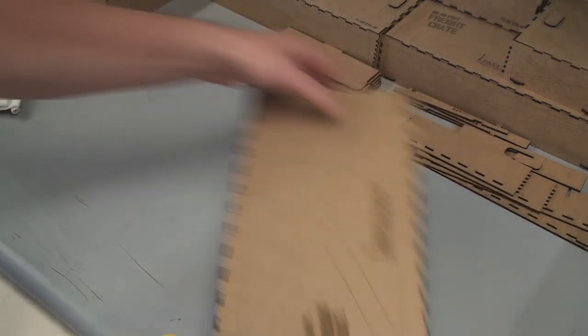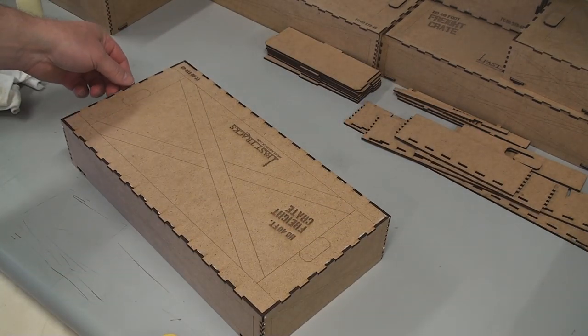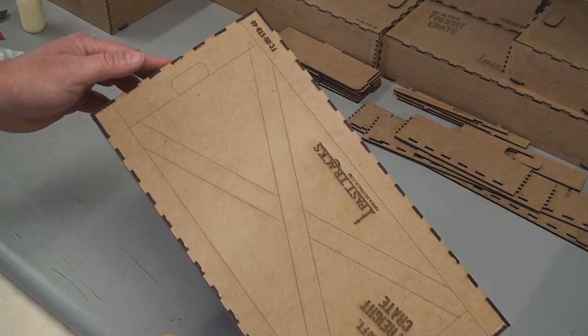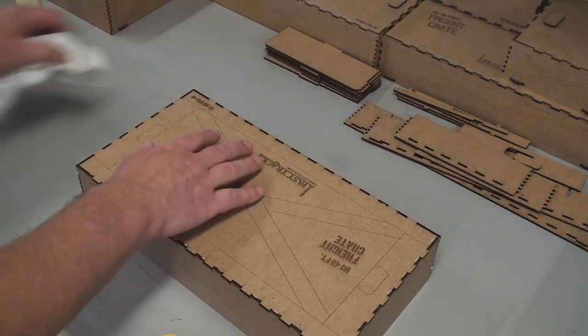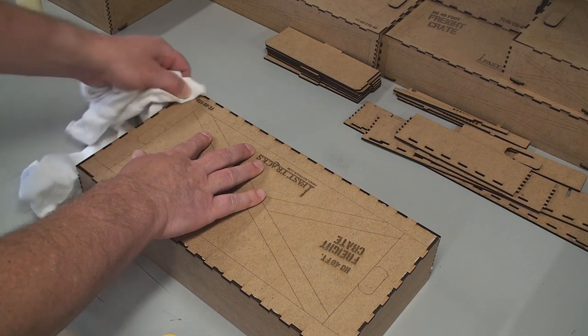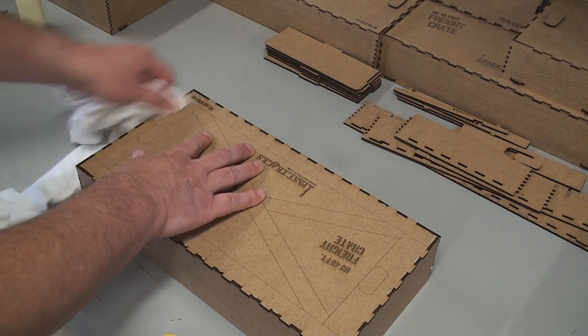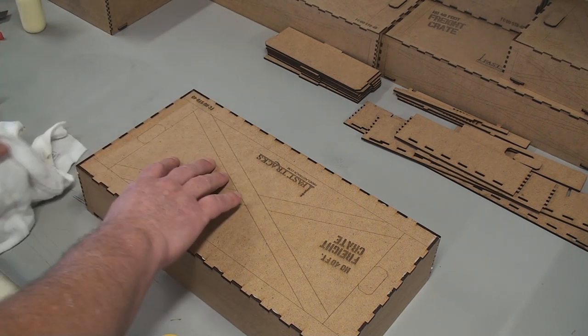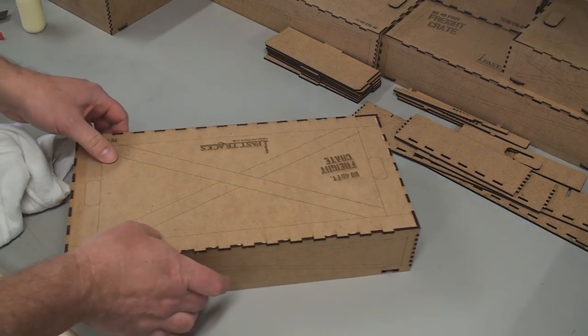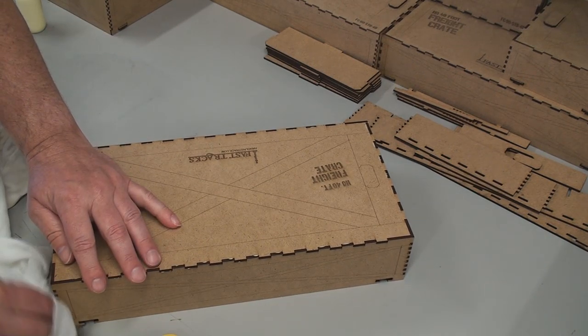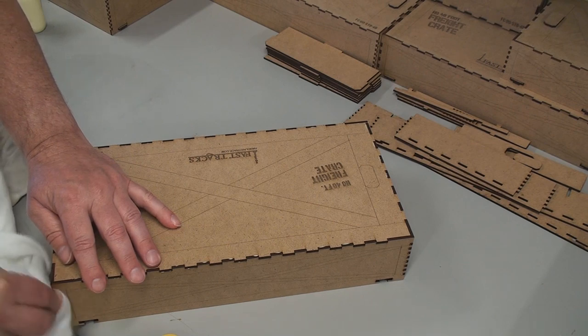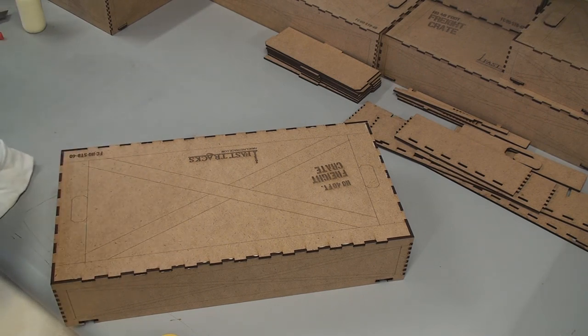Now this glue can leave marks on the box. See where it's leached out? You want to clean that off. If you don't, it's going to look ugly. So I just take the damp cloth and go down all the corners. I'll take the box and let it hang over the edge of a table so I can get the corner, the exterior, the extreme corners, nice and clean.